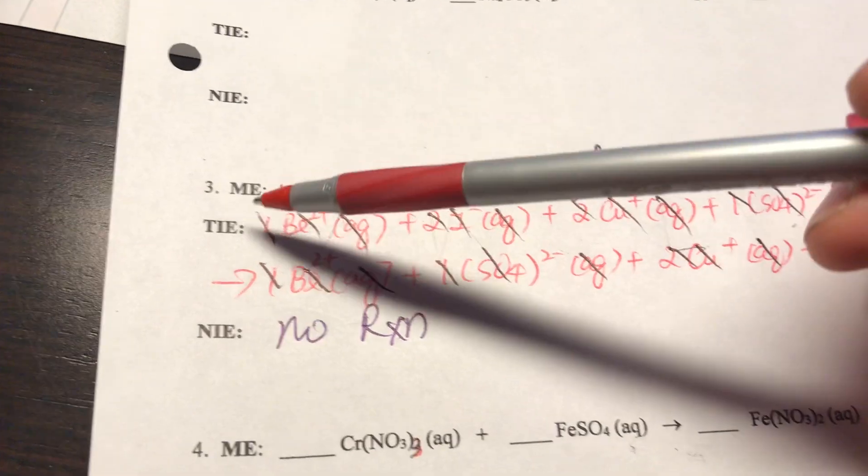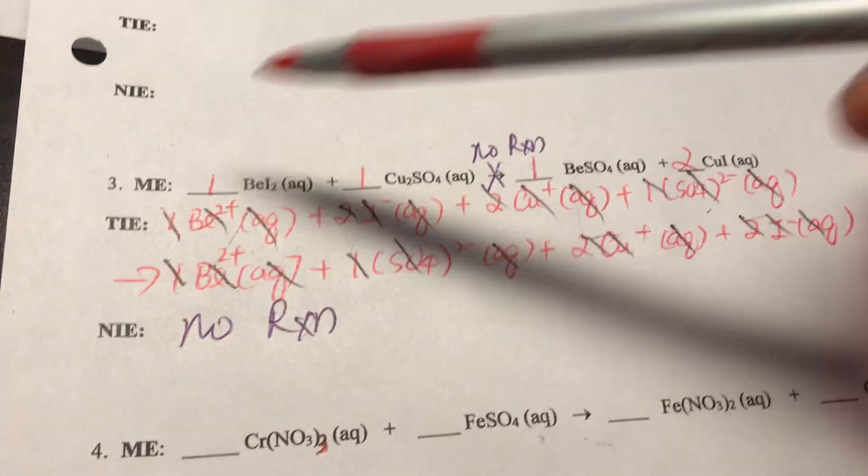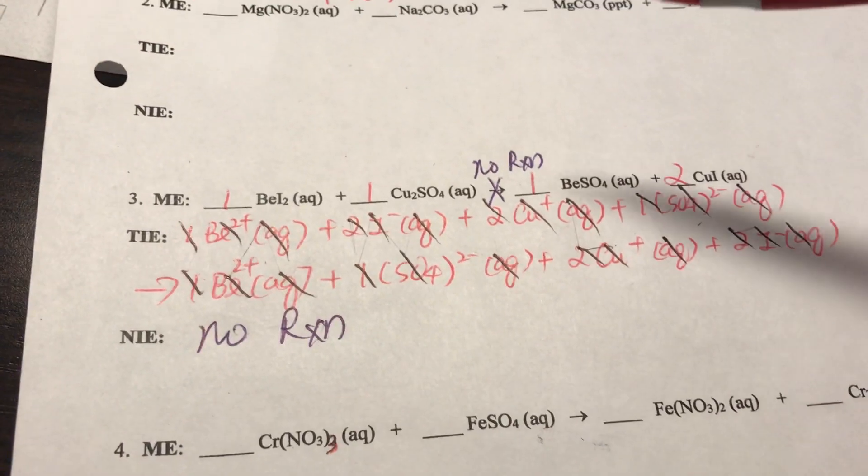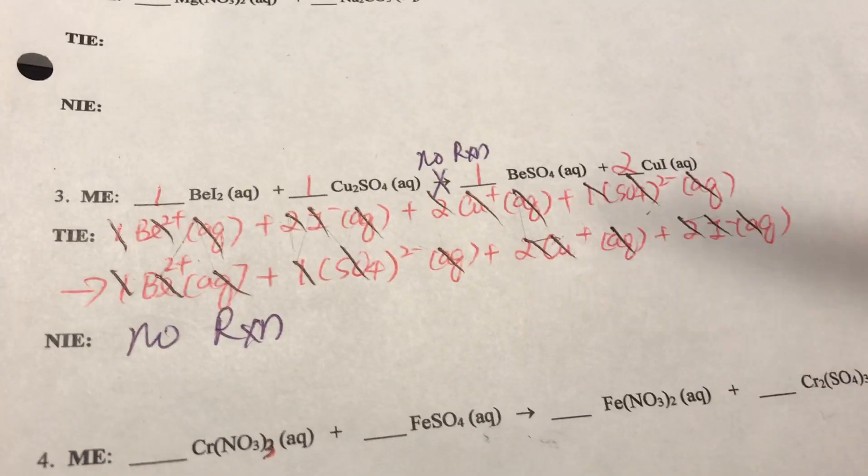Now we still go ahead to write down the total ionic equation because we want to find out what is inside the beaker, and then we can tell what's going on, why there's no reaction.